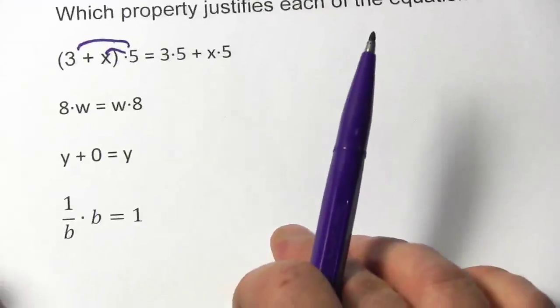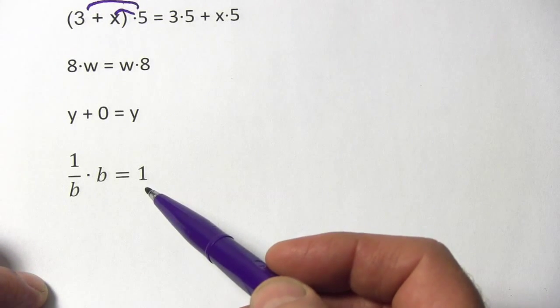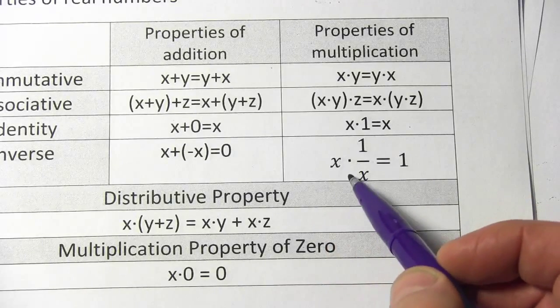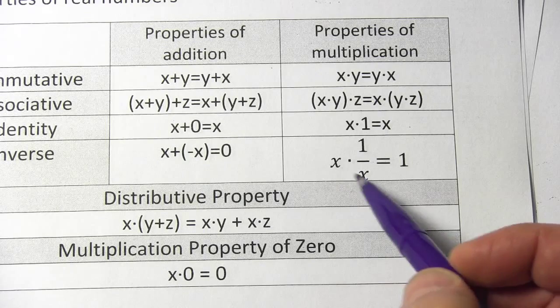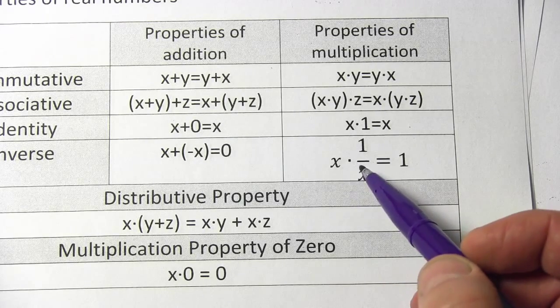Alright, one more. We've got 1 over b times b equals 1. If you look on this chart, there's only one place where you see a 1 over something. It's this one. If you replace the x with the b and then just shift the pieces around a little bit, you get exactly the same thing.